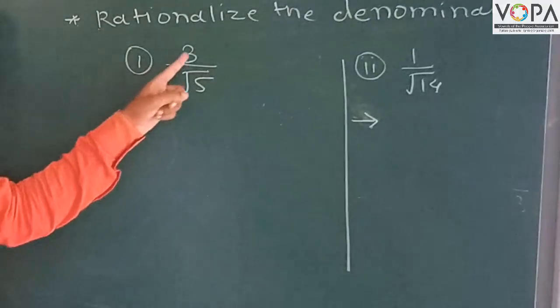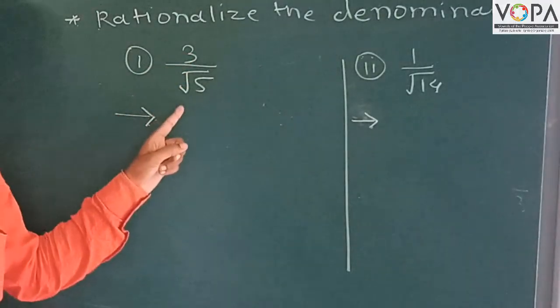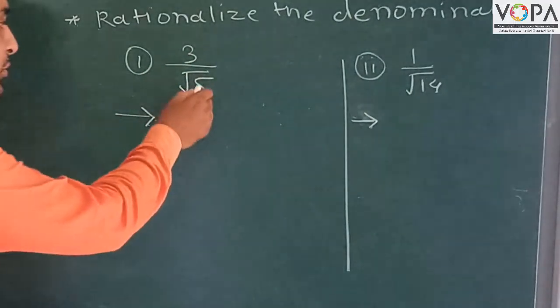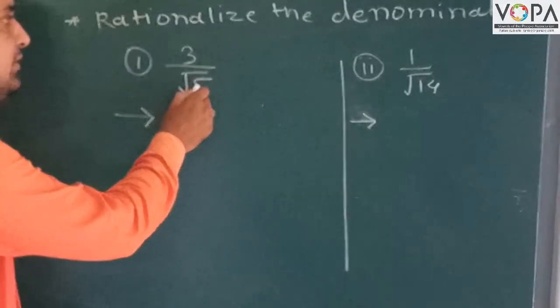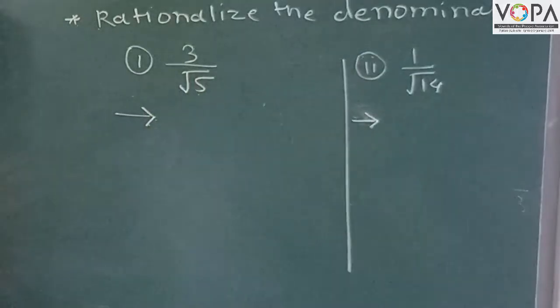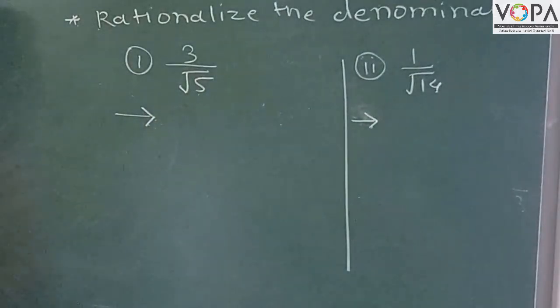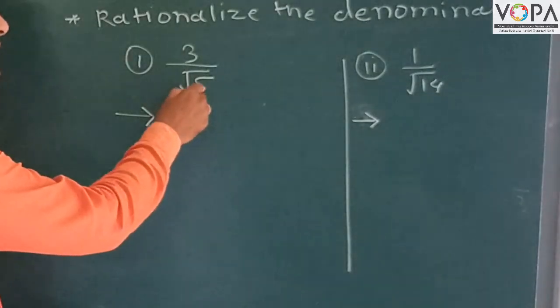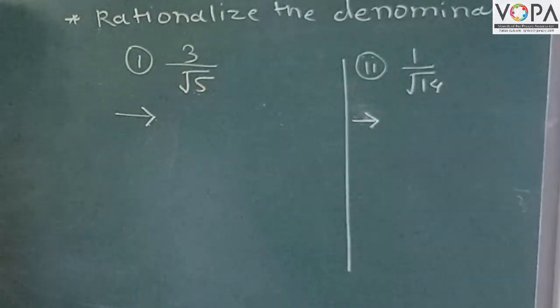The first example is C upon root 5. Root 5 is the denominator, and root 5 is the rationalization factor.